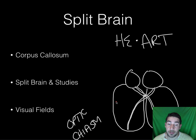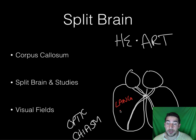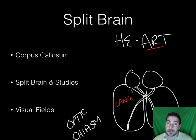If you recall from the last lecture, the left hemisphere is your language center — that's where Broca's area and Wernicke's area are. So when they ask, 'what word did you see?' the left side, which goes over to the right visual field, sees 'art.' So the participants say they see 'art.'